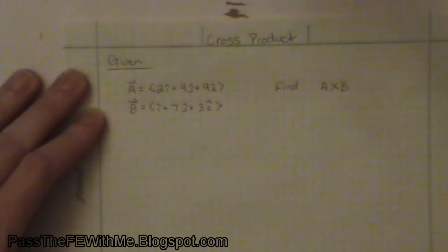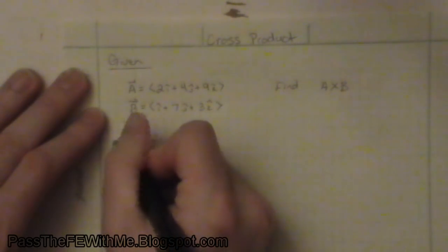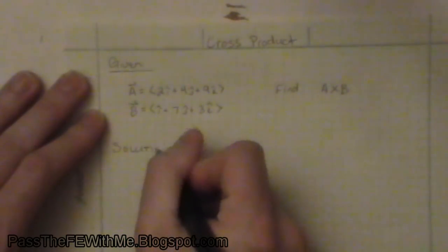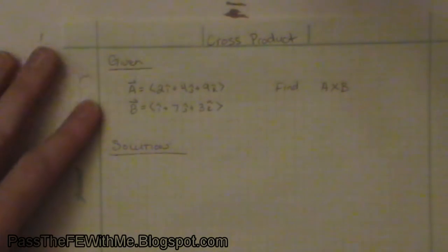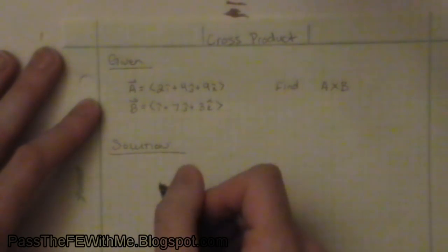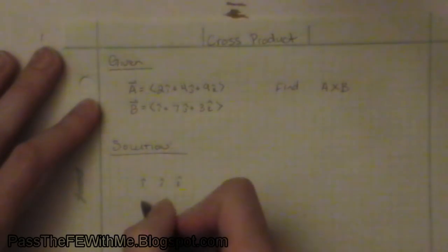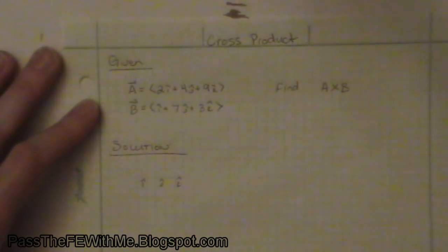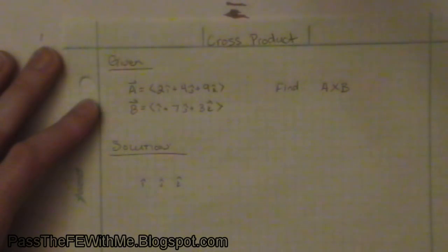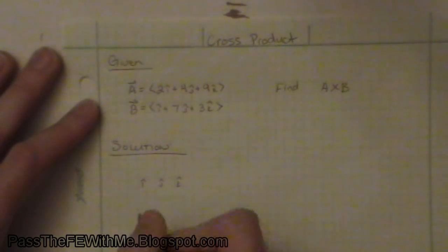The solution is pretty straightforward. We have to set up our matrix — it's a 3 by 3. Across the top row we have i, j, and k. Then the i, j, and k values become the next two rows. So the values for Vector A will be the next row, and the values for Vector B will be the bottom row.